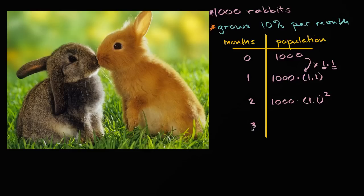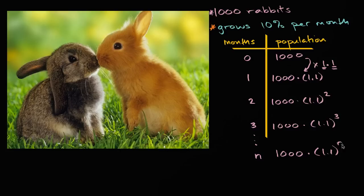And I think you see a pattern emerging. After another month, the population is going to be 1,000 times 1.1 to the third power. We're just going to multiply by 1.1 again. And so if you were to go n months into the future, you could see what's going to be. It's going to be 1,000 times 1.1 to the nth power.